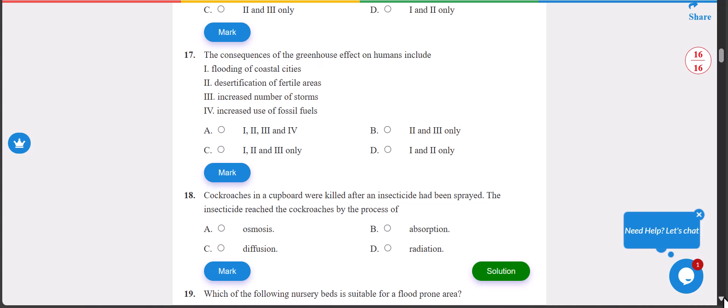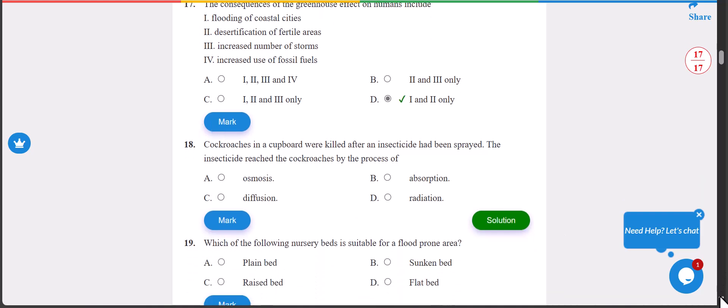Number 17: the consequences of the greenhouse effect on humans include what? The answer is D, that is I and II. I and II is correct.